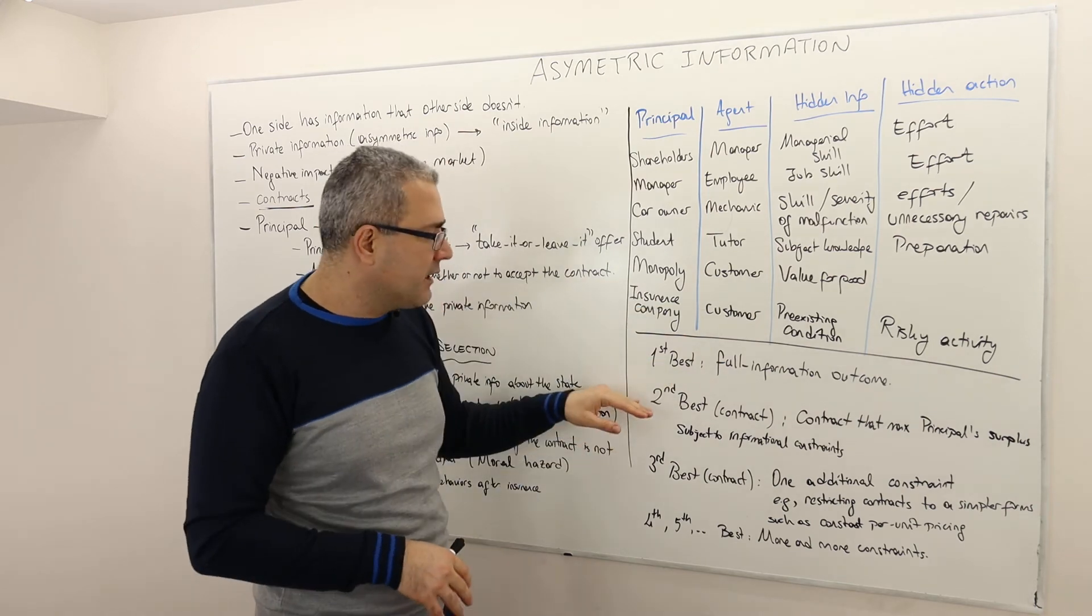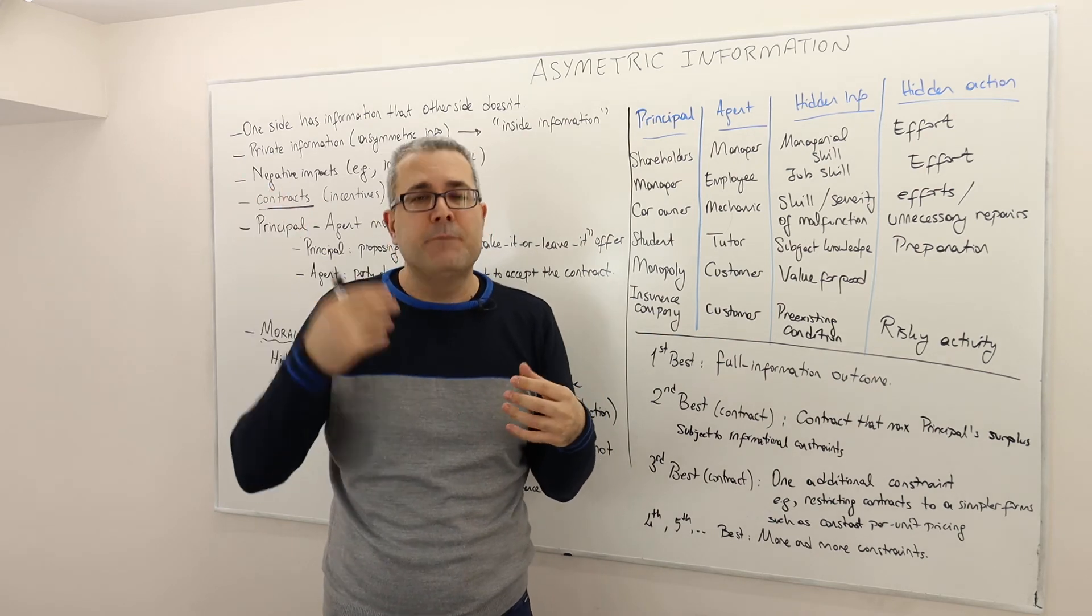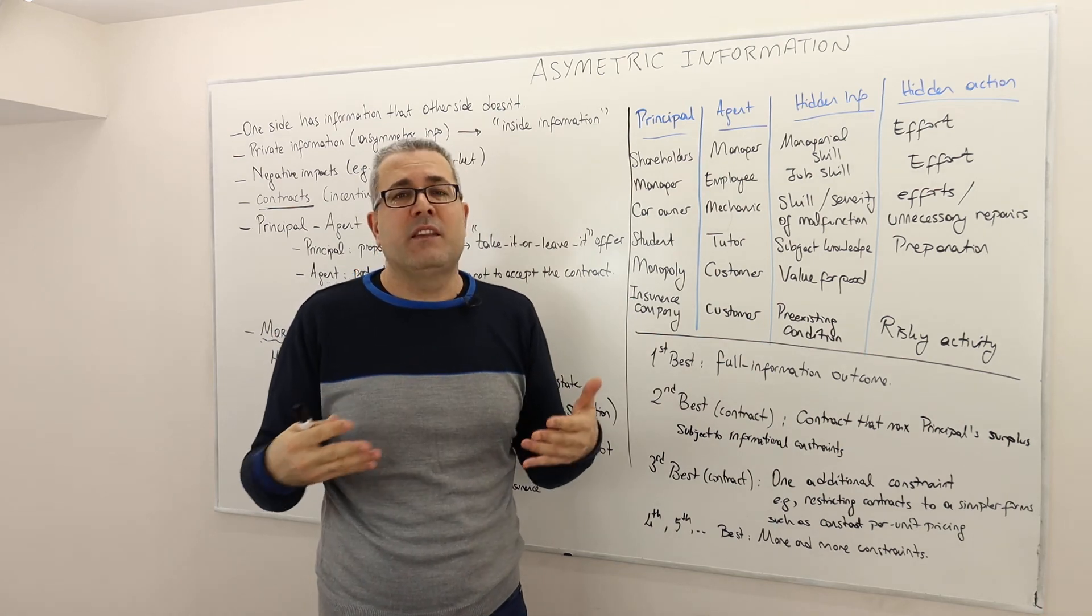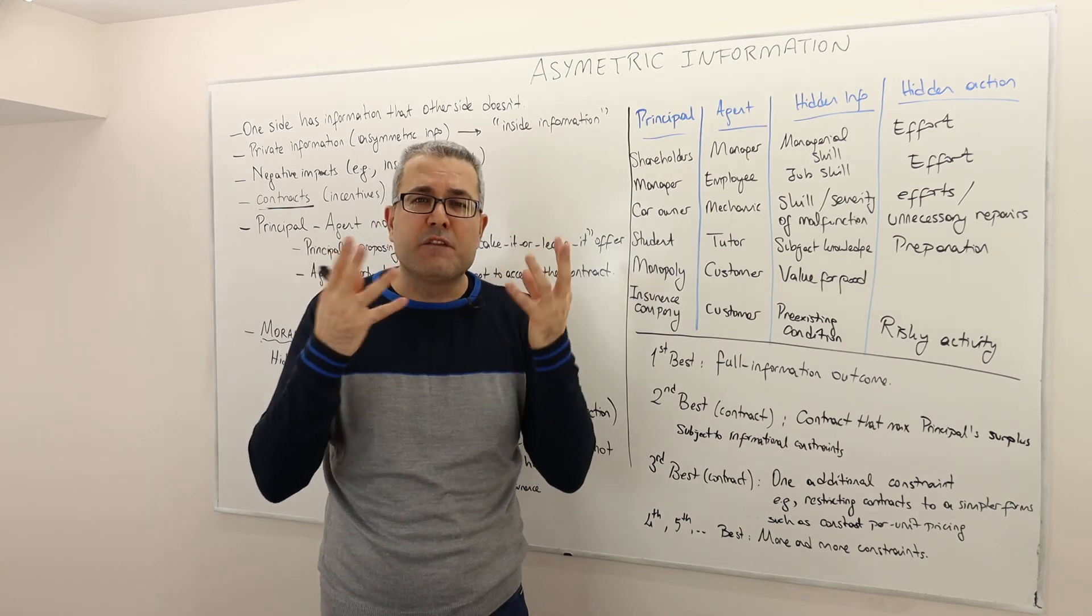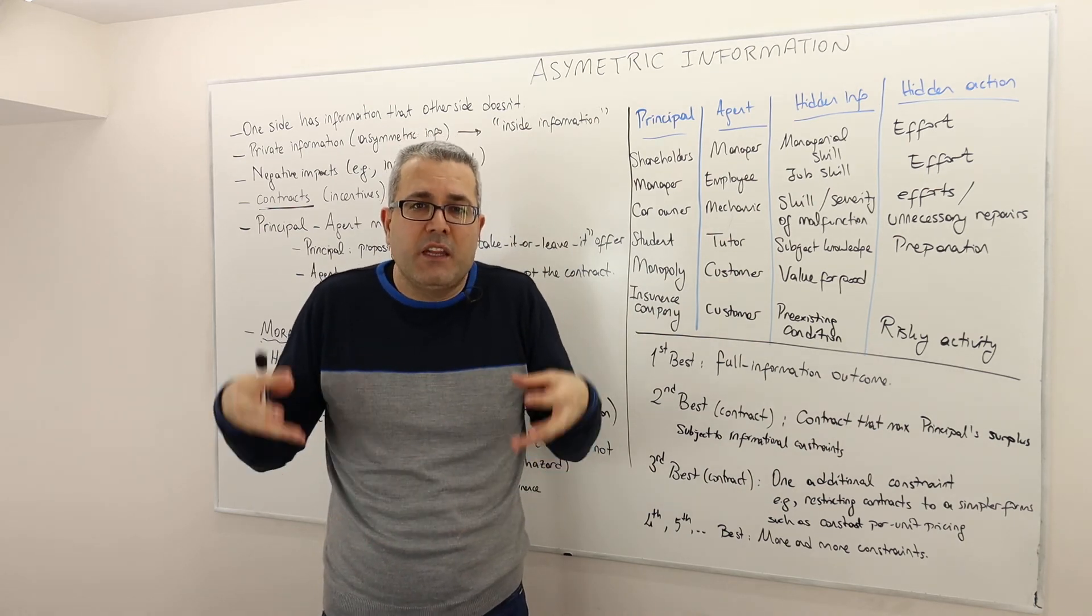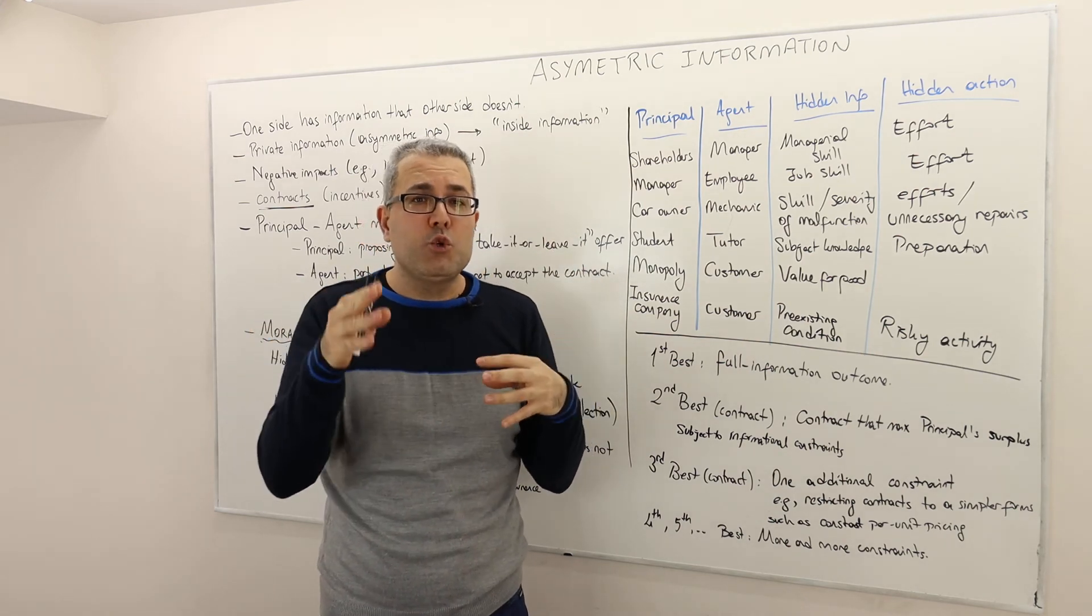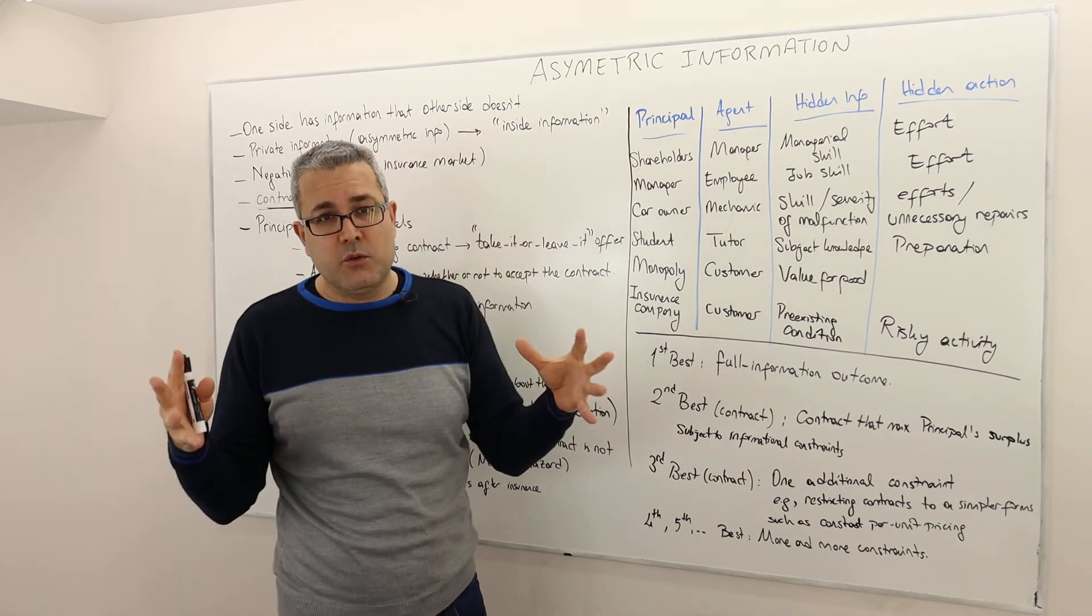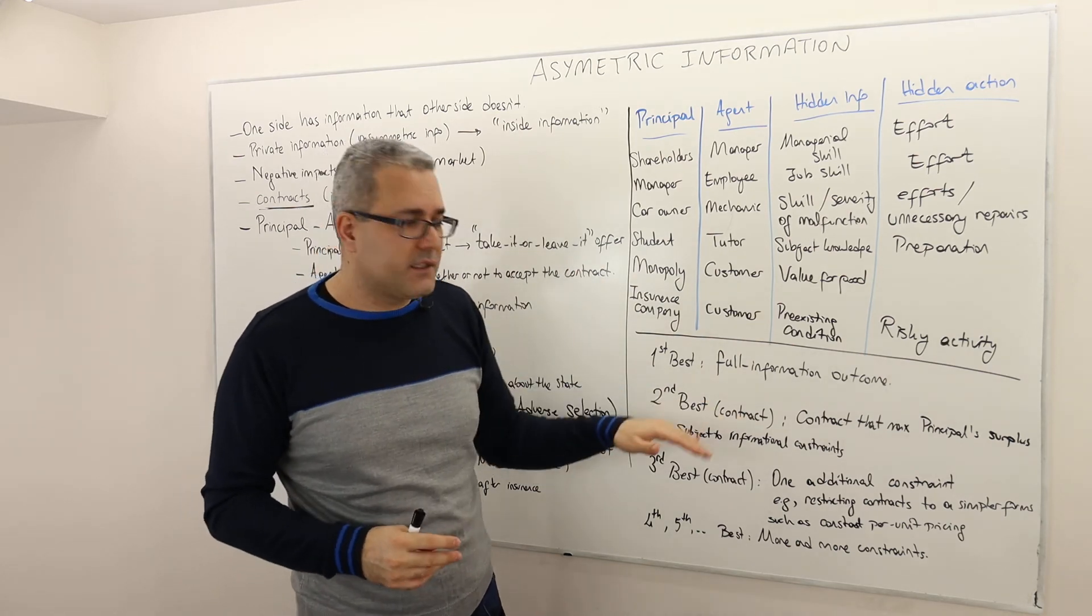The second best contract is, again, the contract that maximizes the payoff or the surplus of the principal given the constraint that the agent is more informed than the principal. So this informational asymmetry becomes a constraint. Under this constraint, what is the optimal contract for the principal? So this optimization problem, which we will formally look at next, has a solution. It's going to give us some contract, and those contracts we're going to call them second best.